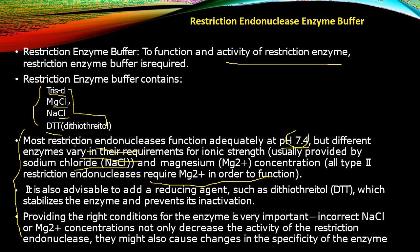Type II restriction endonuclease enzymes require Mg2+ or a sufficiently good ionic strength in order to function. That is why MgCl2 is used — it is a very important component in the restriction buffer.